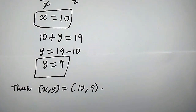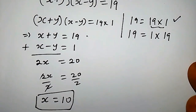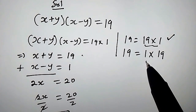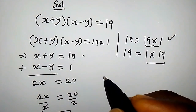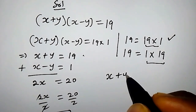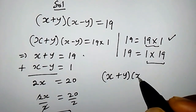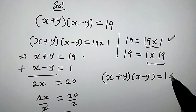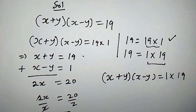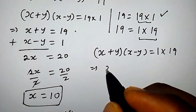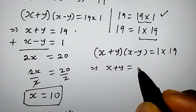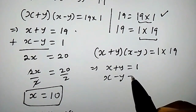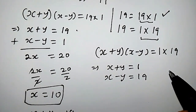Now let's consider the second case. We replace 19 with 1 times 19, so we have (x plus y) times (x minus y) equals 1 times 19, which implies that x plus y equals 1 and x minus y equals 19.